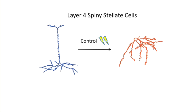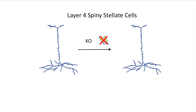Neuronal morphology was also affected by the absence of thalamocortical neurotransmission. Normally, layer 4 spiny stellate cells have an apical process which projects to the cortical surface. During development, this apical process is retracted and typical compact spiny stellate cells form. In the absence of thalamocortical neurotransmission, these layer 4 spiny stellate cells retained their apical dendrite and looked pyramidal.